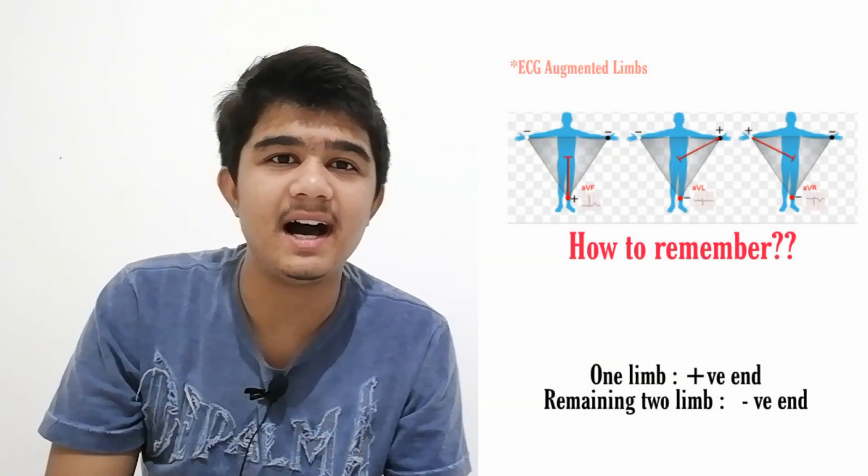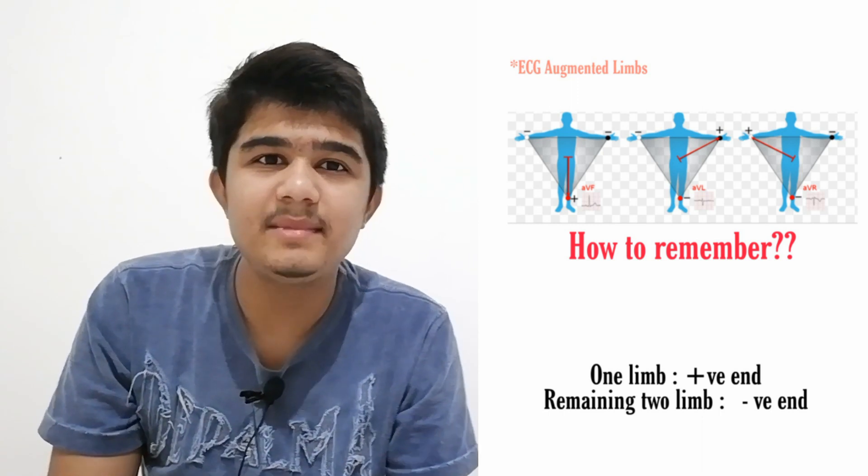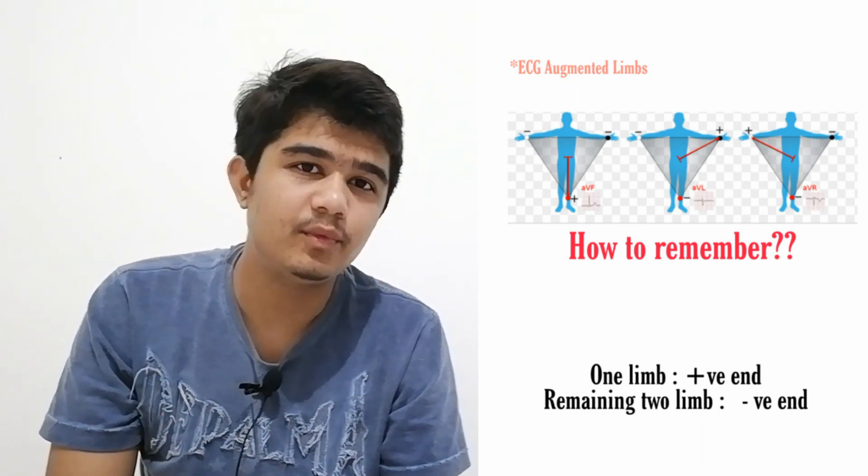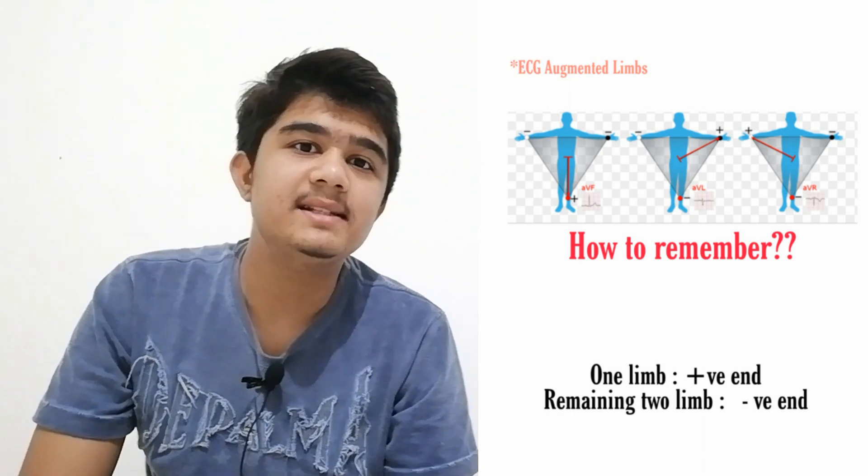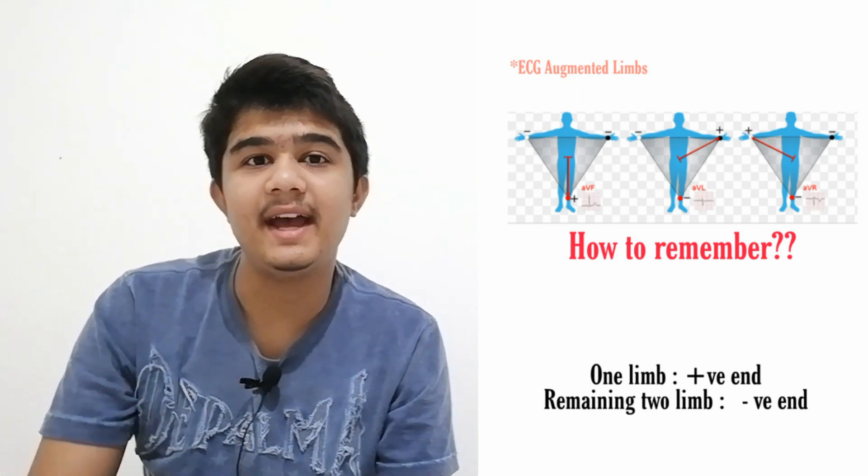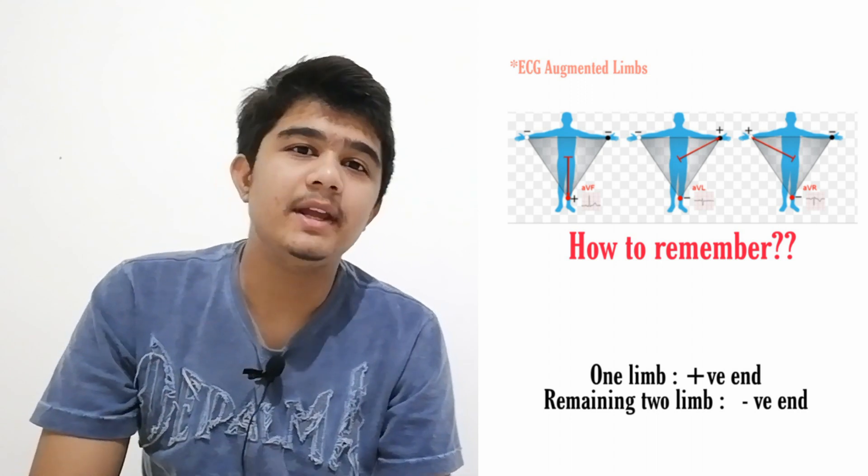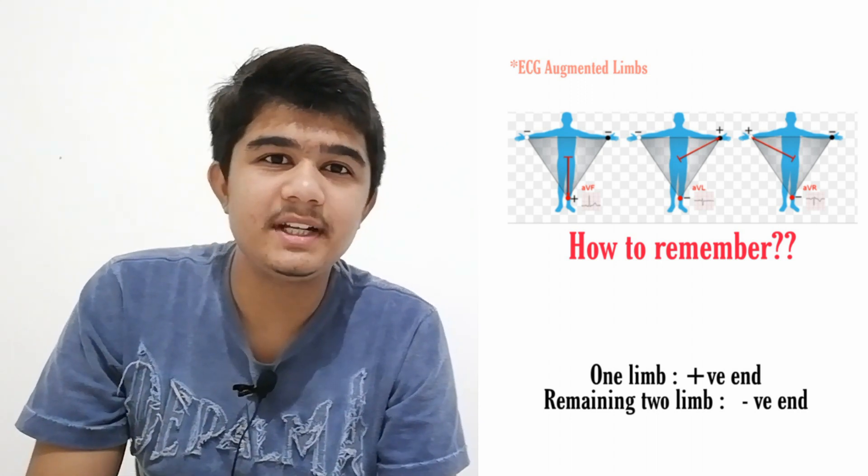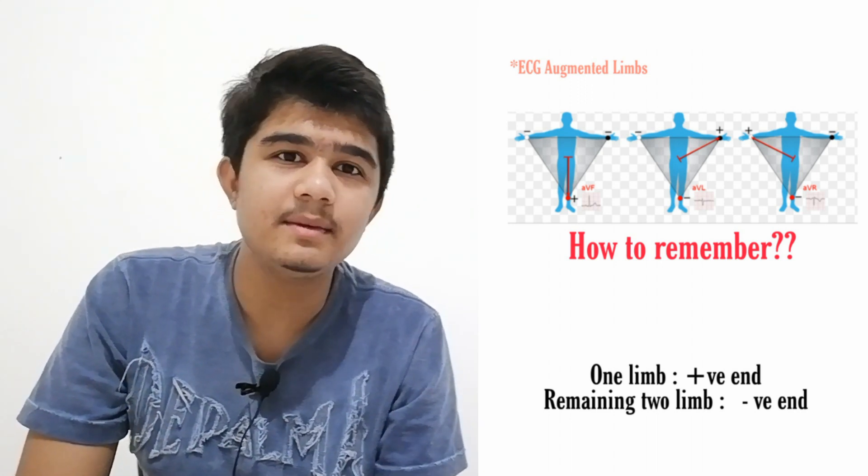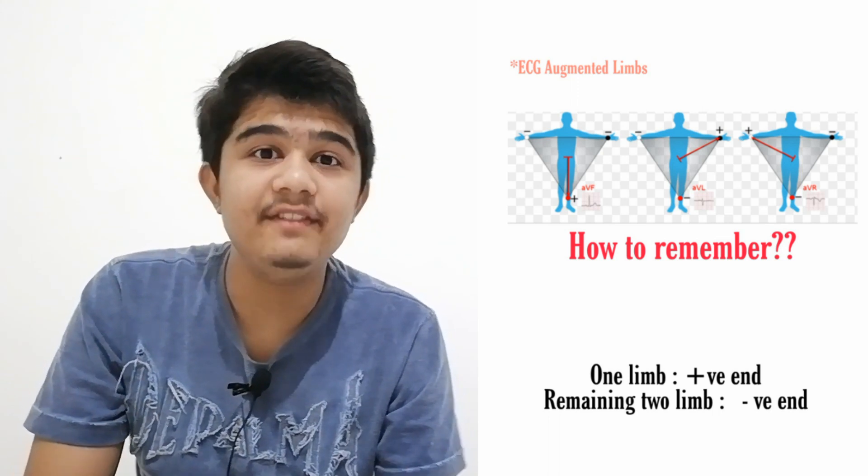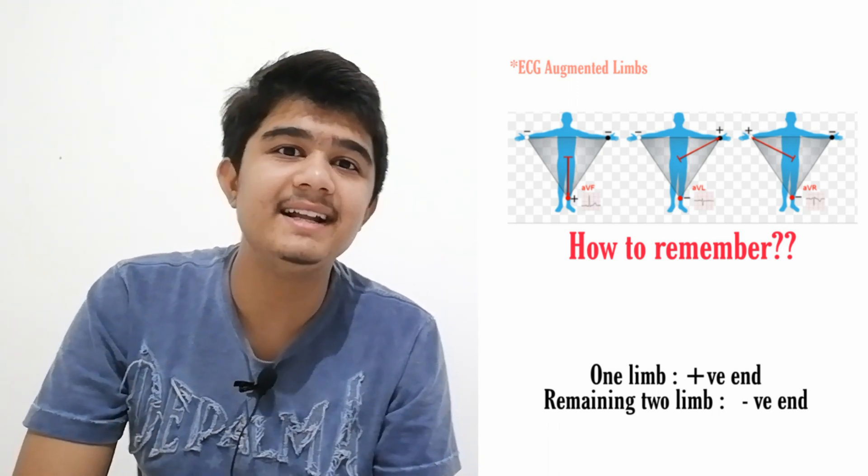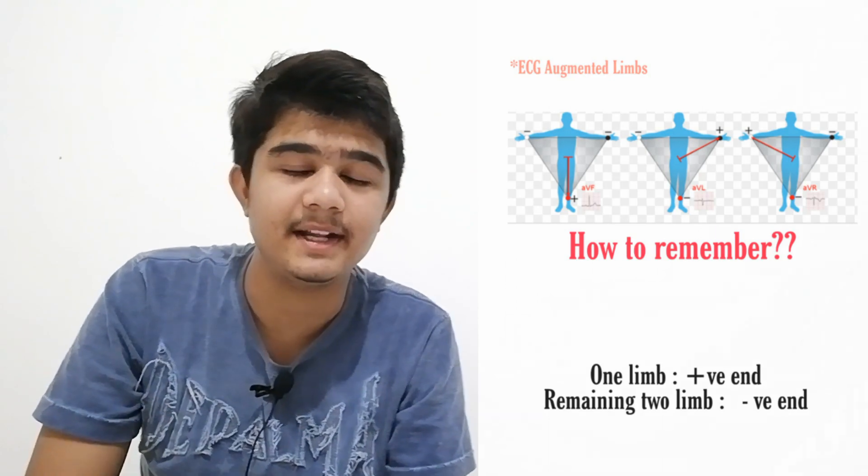AVR means right arm is positive and the other two leads are negative. AVL means left arm is positive, foot and right arm are negative. AVF means left foot is positive, and right arm and left arm are negative.